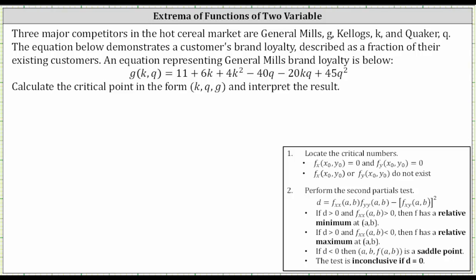Three major competitors in the hot cereal market are General Mills, Kellogg's, and Quaker. The equation below demonstrates a customer's brand loyalty, described as a fraction of their existing customers. An equation representing General Mills' brand loyalty is below, given by g of k comma q. We're asked to calculate the critical point in the form of k comma q comma g, and interpret the result.